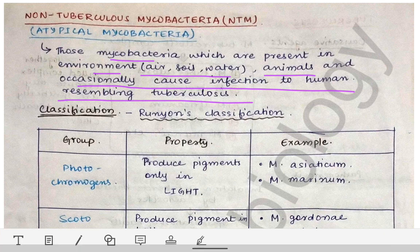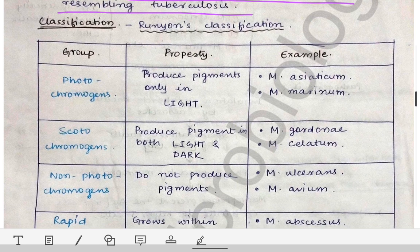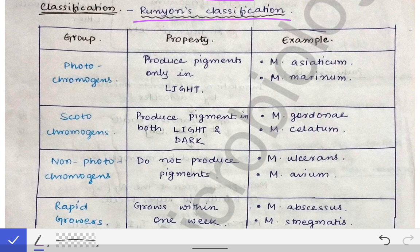One very important point in NTM is the classification. Questions frequently come on this. The classification is called Runyon's classification, according to which NTM are grouped into four groups: photochromogens, scotochromogens, non-photochromogens, and rapid growers. We need to know the important properties of these groups plus some examples.